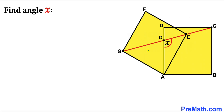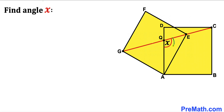Welcome to pre-math. In this video we have got these two identical squares put together such that vertices G, E and C are collinear — in other words these points G, E and C lie on the very same line. Moreover, this line GC intersects another line at point Q, and as a result we get angle AQE, represented by X. Our task is to find the value of angle X.